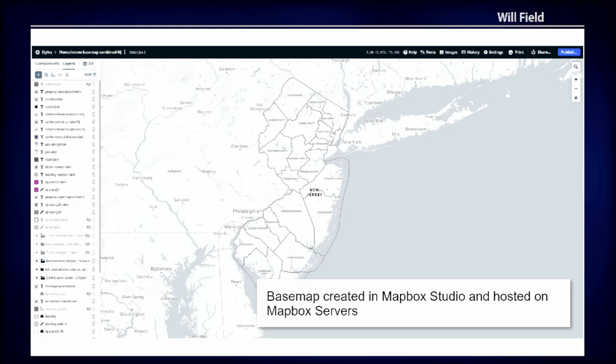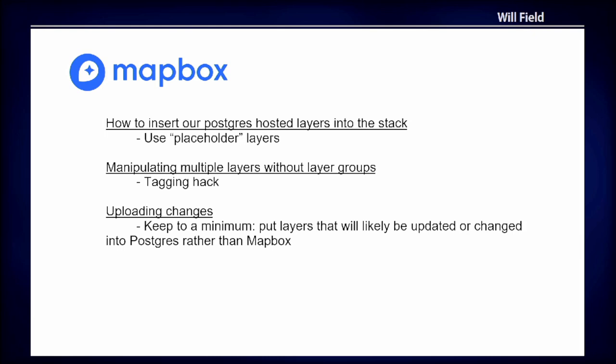We begin our projects by creating a Mapbox style, which acts as a skeleton or outline for the final map, and it's then pretty heavily manipulated in the code to do what we want it to do. We keep the actual district layers separate in Postgres, for reasons I'll get into later.